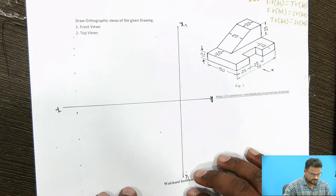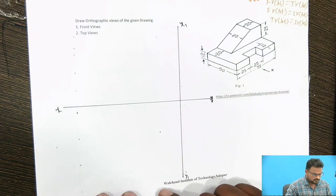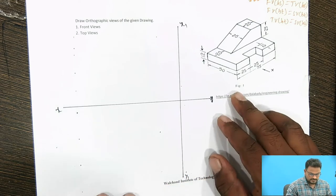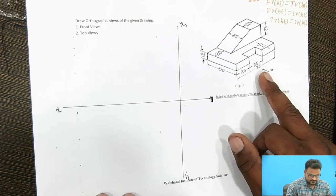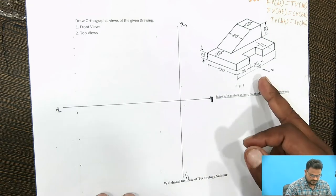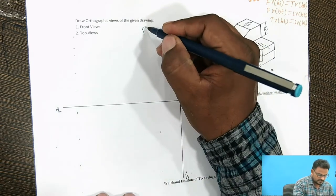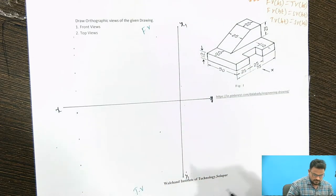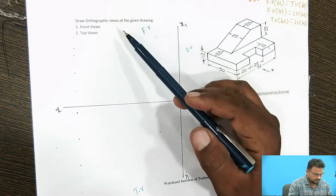This is the simple object I have taken for the second problem. We have to draw the orthographic view of the given diagram — the front view, the top view. When we see from the x direction, that is from the right side, we have to draw the front view in this area, the top view here, and the side view on this side.